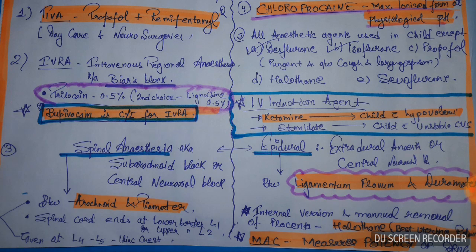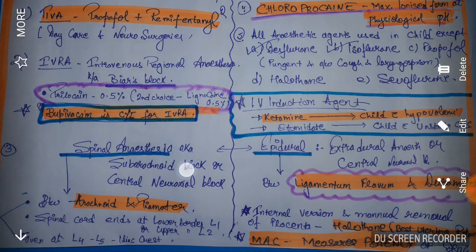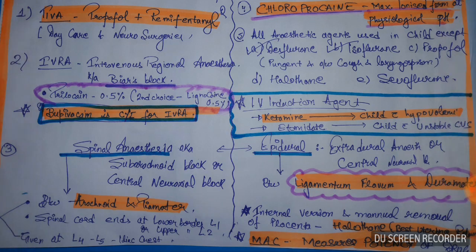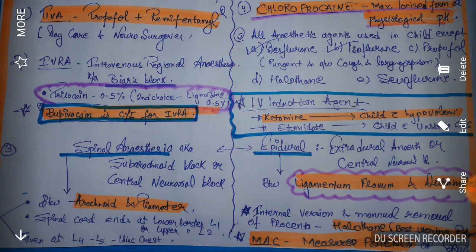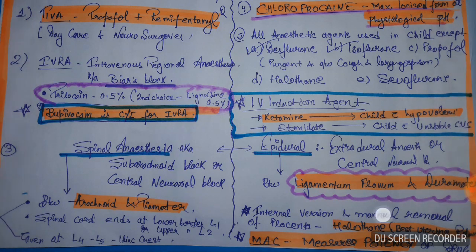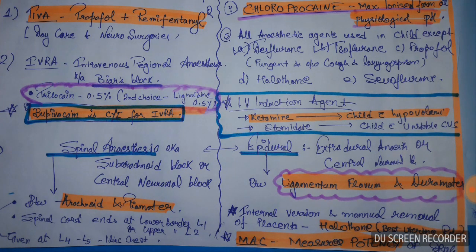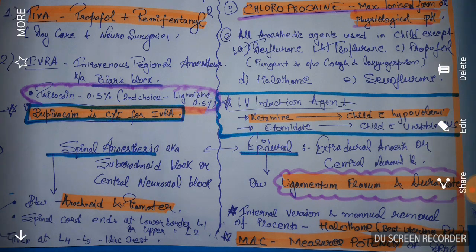Hence, spinal anesthesia is given at the level of L4 or L5, that is the iliac crest level. Epidural is the extradural anesthesia — spinal is the subarachnoid block — while the epidural is extradural, meaning outside the dura, specifically between the dura and the ligamentum flavum. This is an important MCQ.